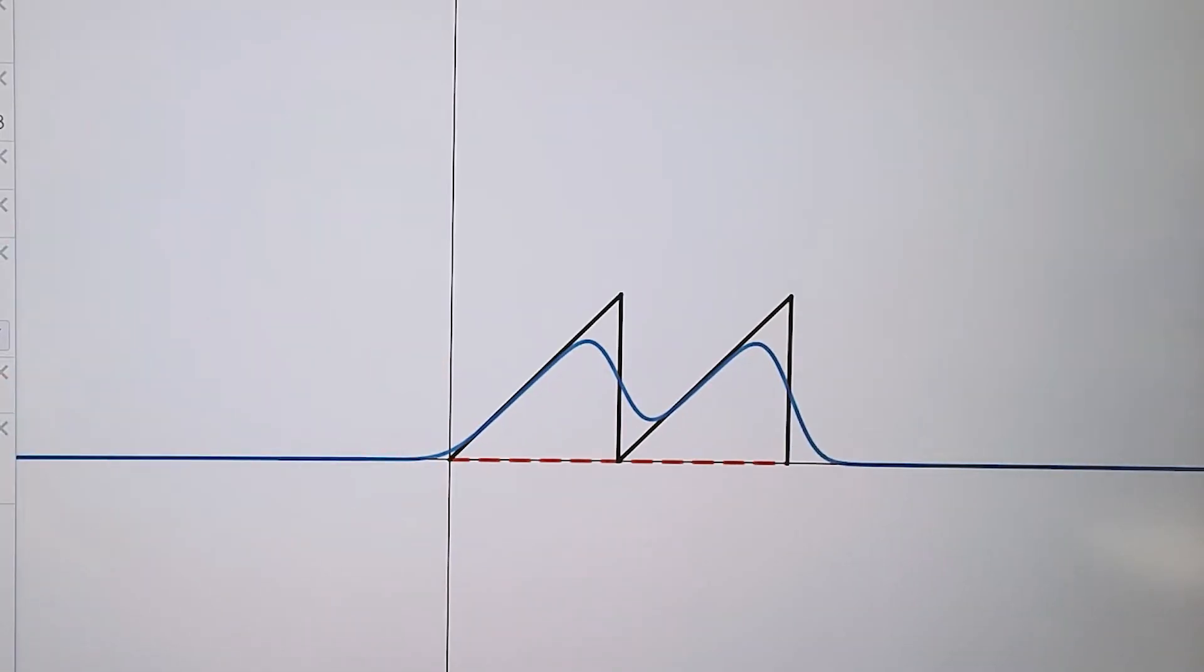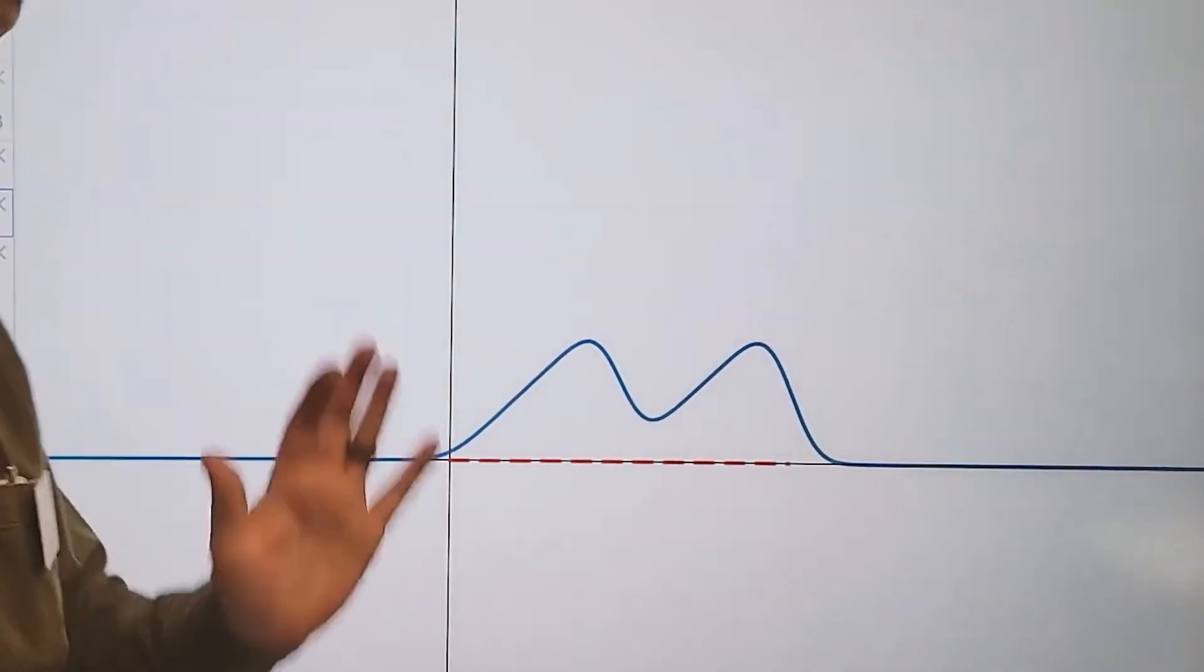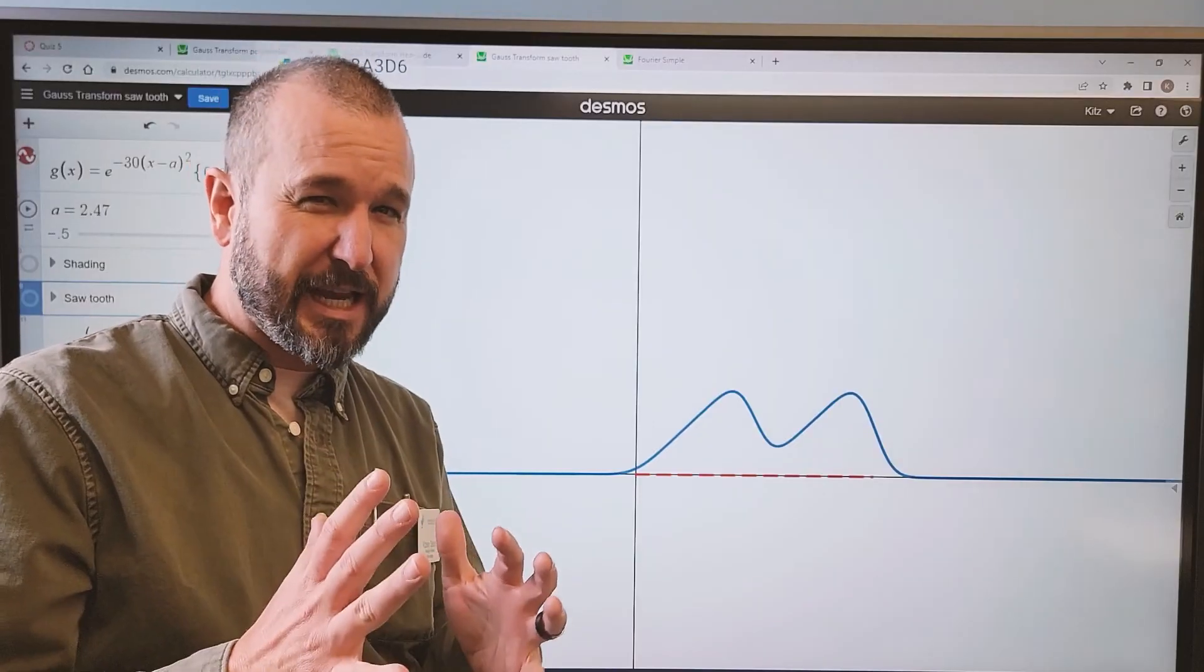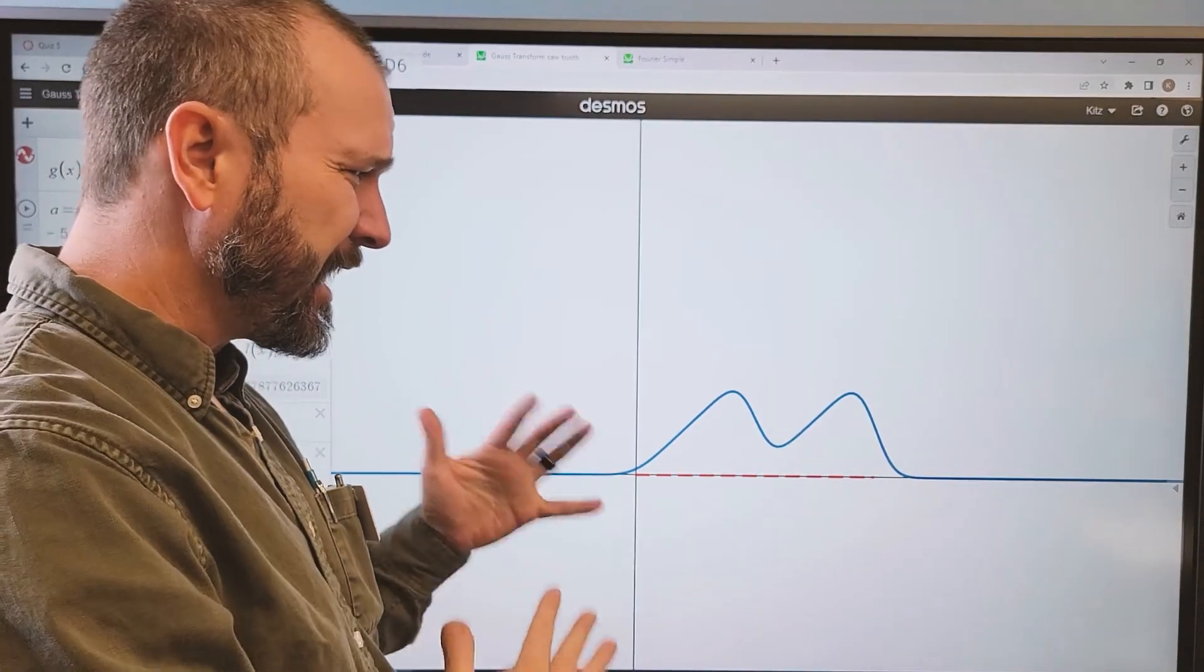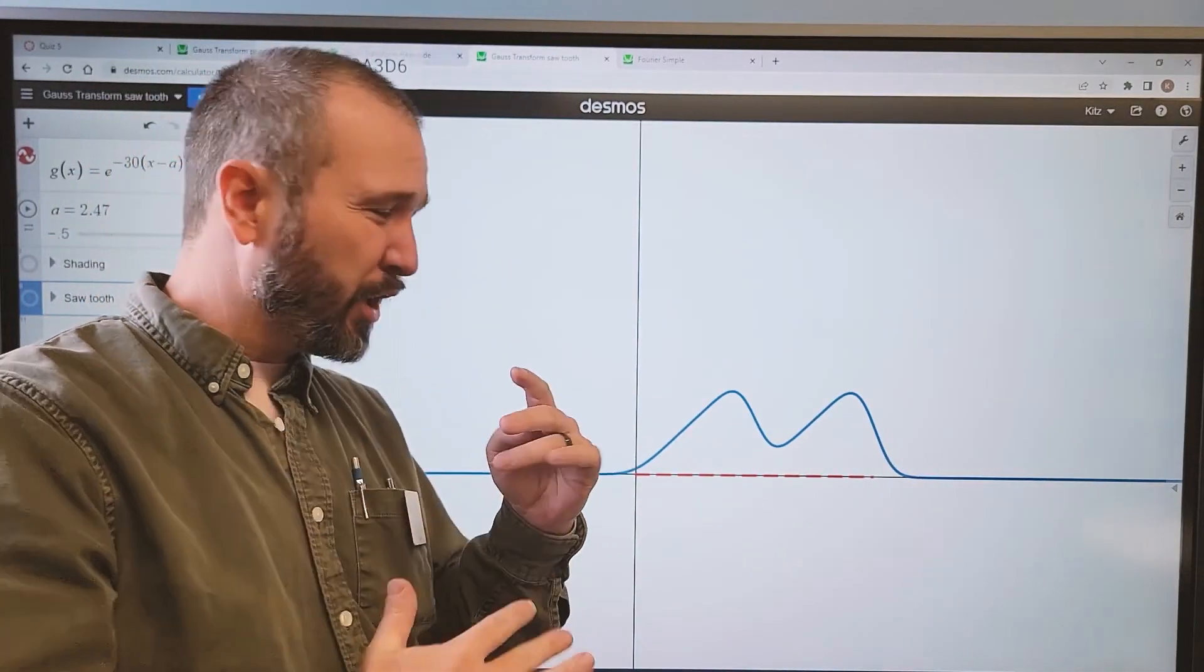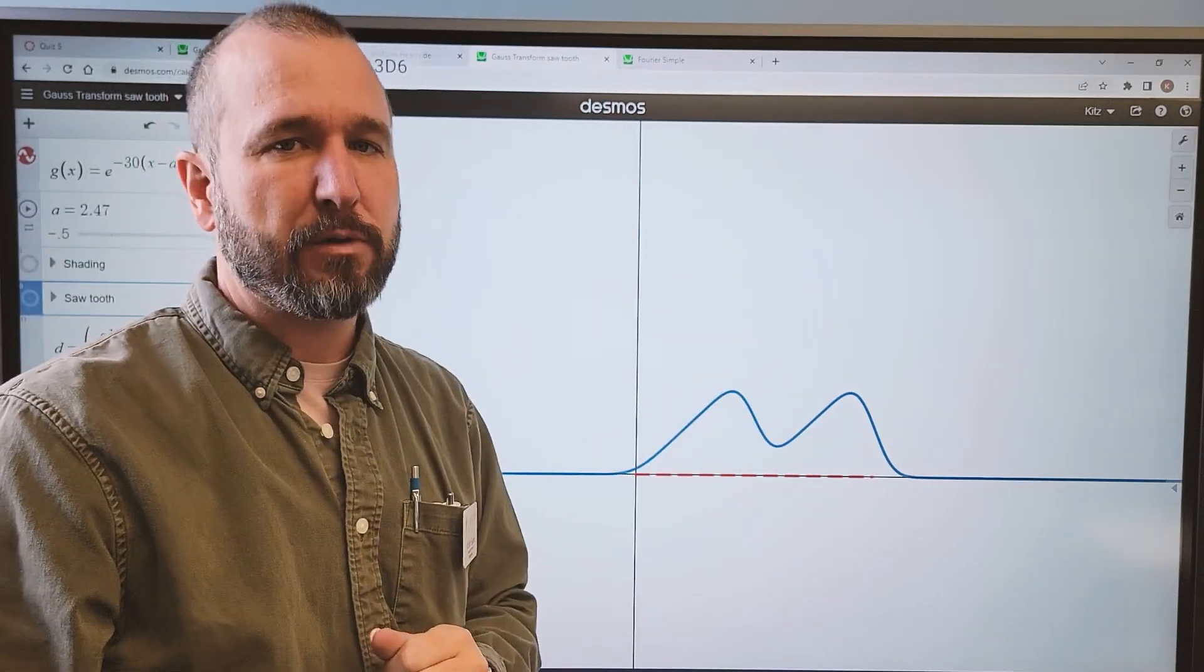There's the original graph. And there is the Weierstrass transform of this graph. So it has this really fantastic effect of taking a really pointy curve that has sharp corners and kind of smoothing it out.